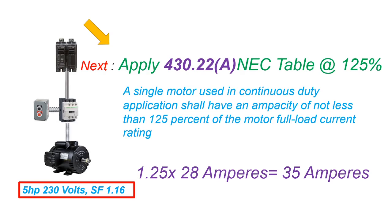Because it is a continuous duty motor — let's assume that unless it states something else, like an elevator which is intermittent duty — we're going to take 125 percent for sizing this branch circuit conductor, as per NEC 430.22(A). That gives us 1.25 times 28 amperes, which equals 35 amperes.